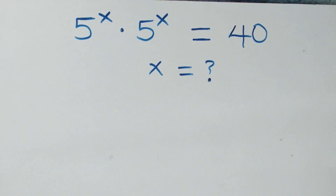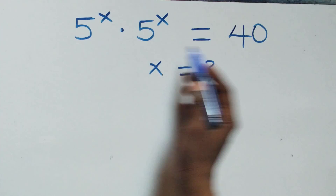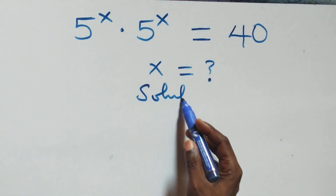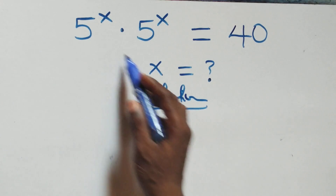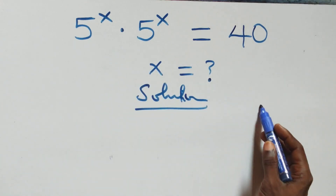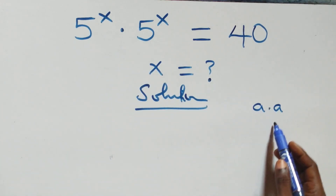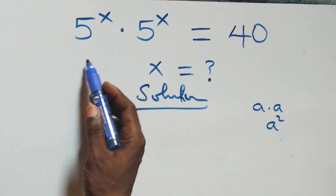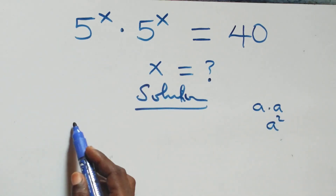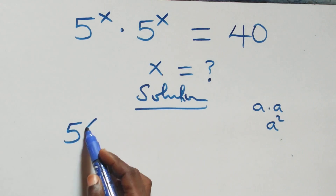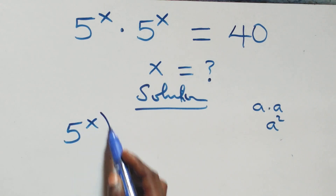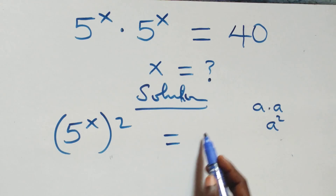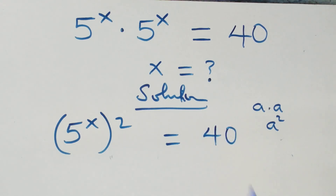How to solve this nice exponential equation. What we have here: when we have a times a, this can be written as a squared. So this same thing multiplying, we can write this as 5 raised to the power x, squared, and it equals 40.